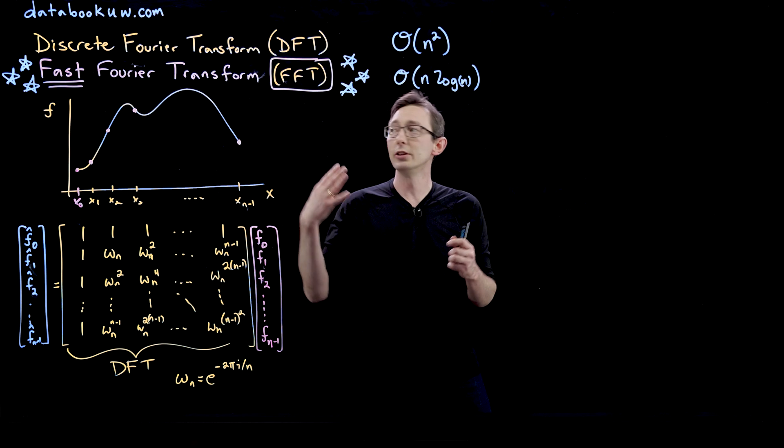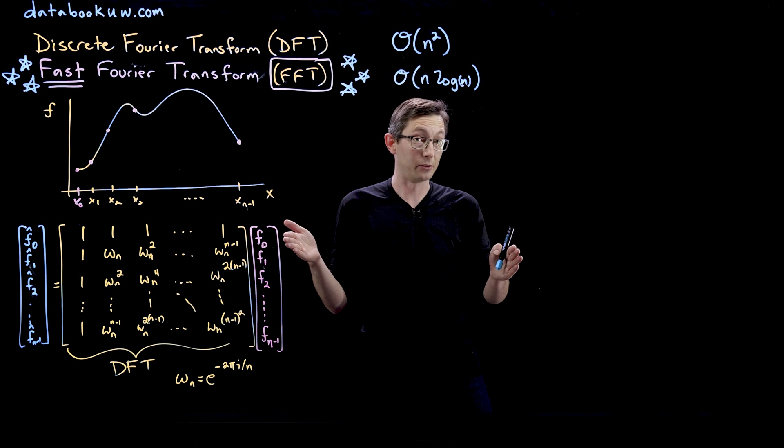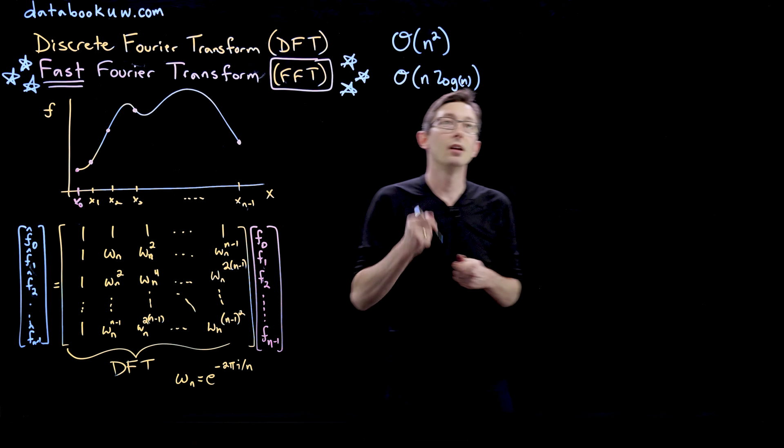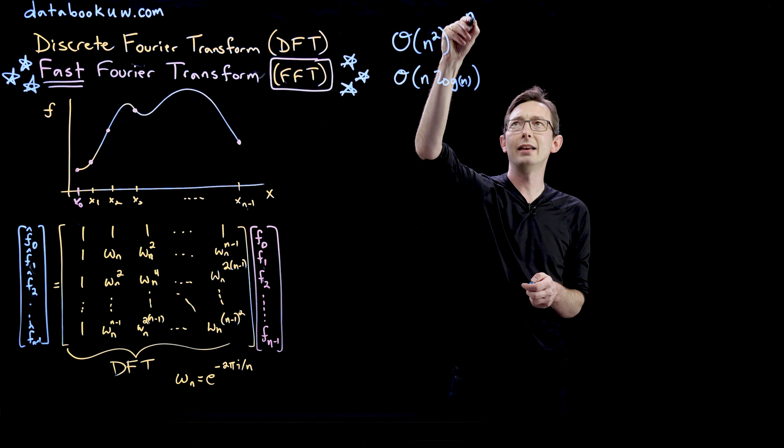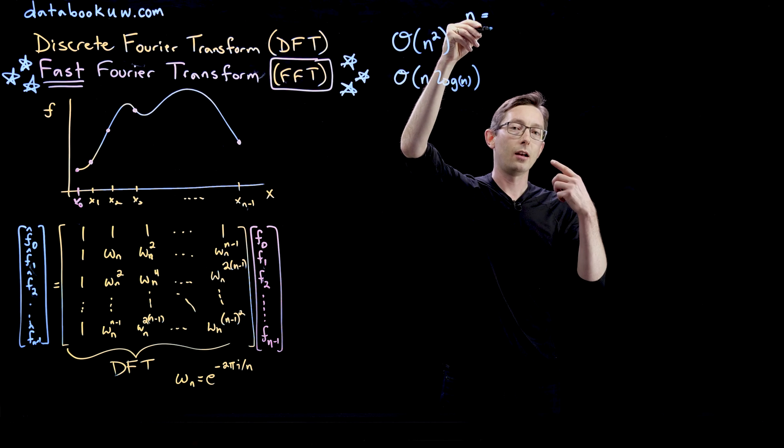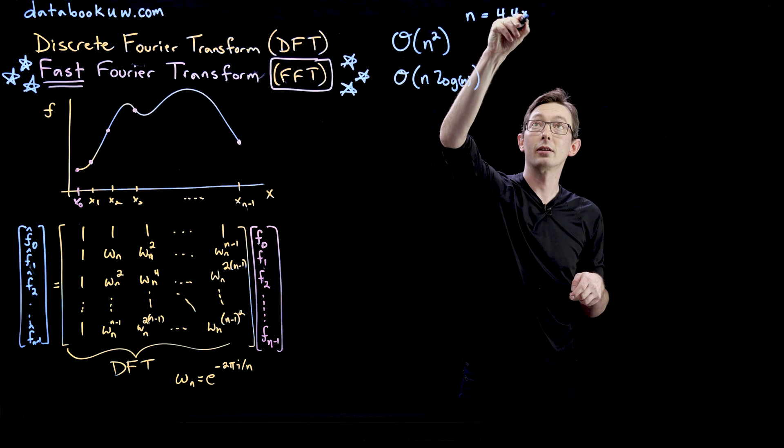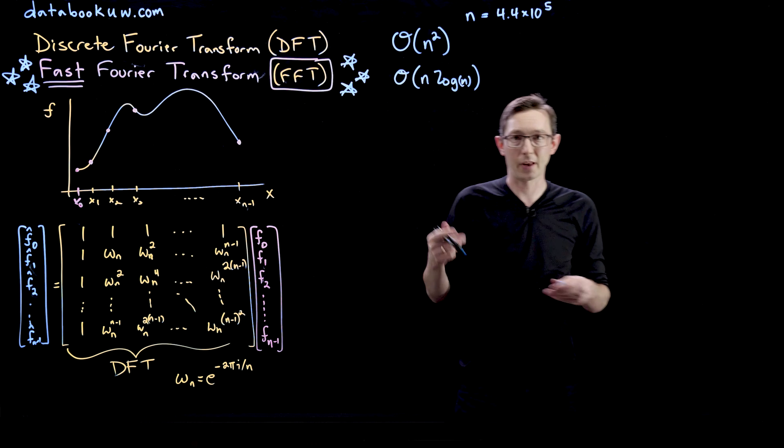if I was trying to use the Fourier transform to compress 10 seconds of an audio signal, and audio is sampled at something like 44 kilohertz, so 10 seconds would be an n of about 4.4 times 10 to the fifth.